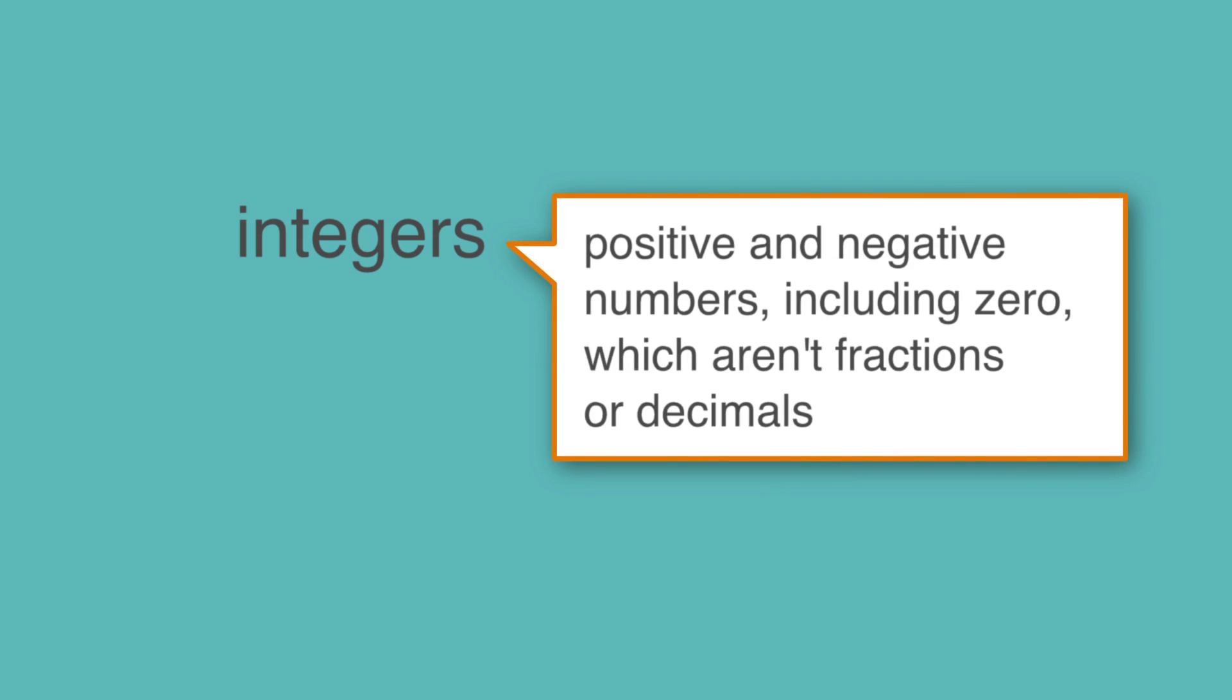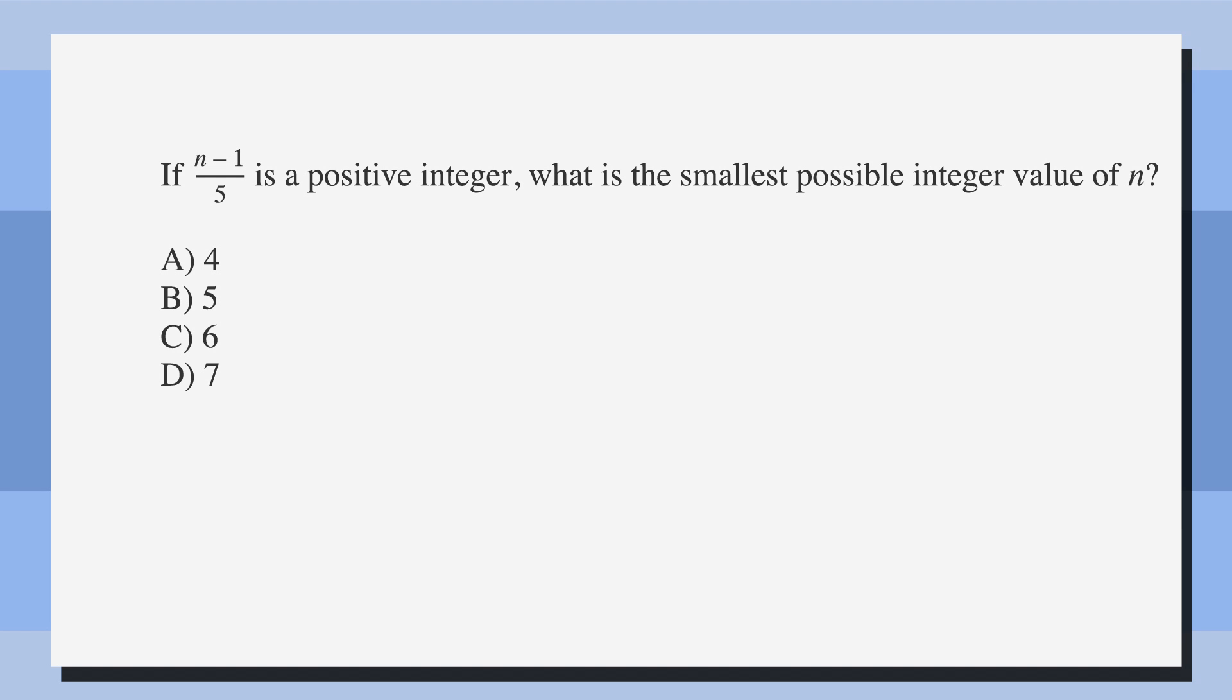Integers are positive and negative numbers, including zero, which aren't fractions or decimals. Let's look at an SAT problem that uses integers. If (n-1)/5 is a positive integer, what is the smallest possible integer value of n?